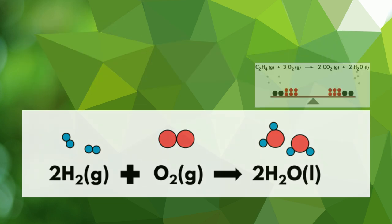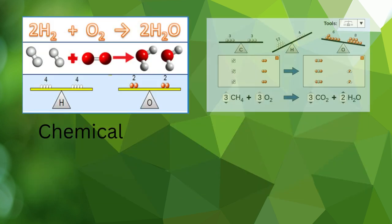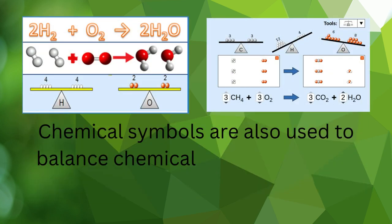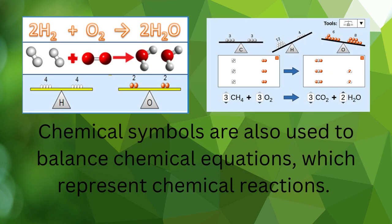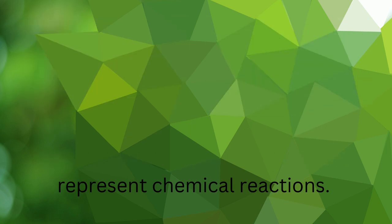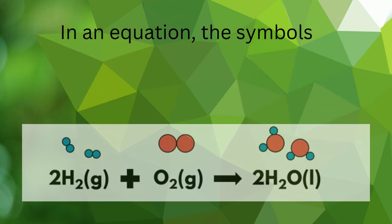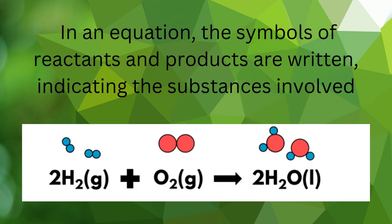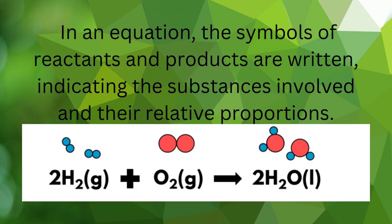Balancing chemical equations. Chemical symbols are also used to balance chemical equations, which represent chemical reactions. In an equation, the symbols of reactants and products are written, indicating the substances involved and their relative proportions.